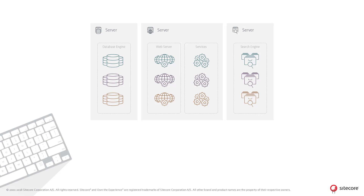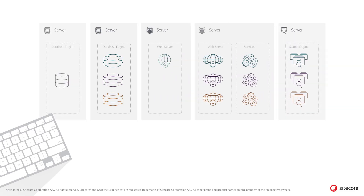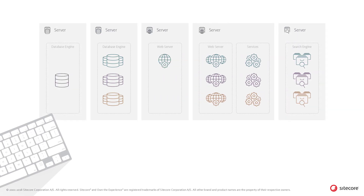In a more business-related scenario, for example when testing your solution, databases and indexes are typically scaled out to separate database or search engines. And in a production environment, specific application roles or databases are moved to separate servers to cater for business scenarios such as high traffic, order processing, email dispatching, security, compliance, and so on.